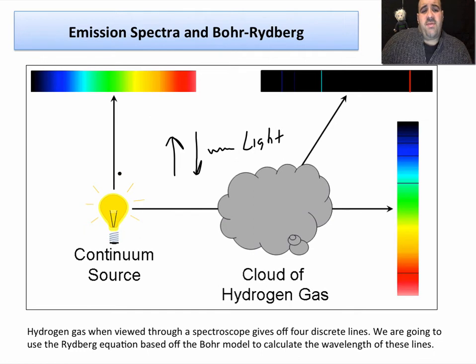When we pass white light through a prism or an incandescent light bulb through a prism, we get a continuous spectrum of light, all the colors of the rainbow.